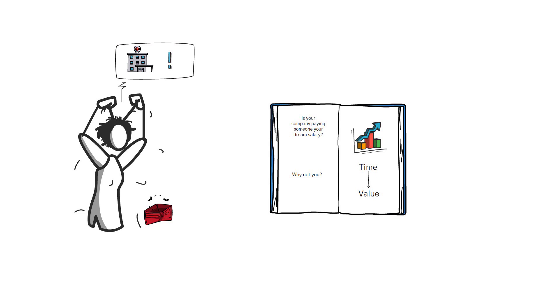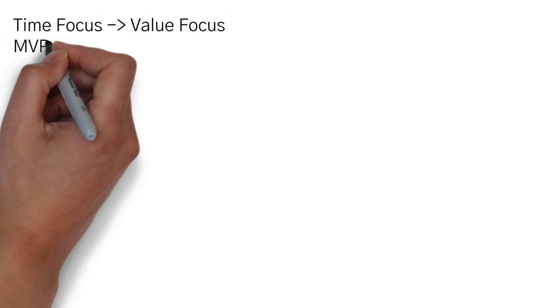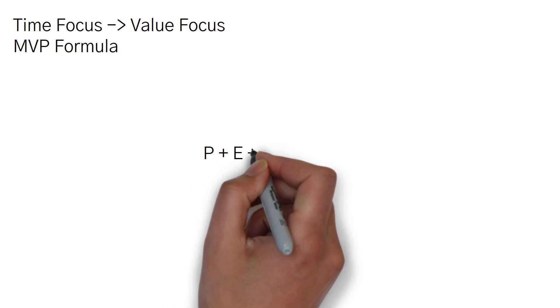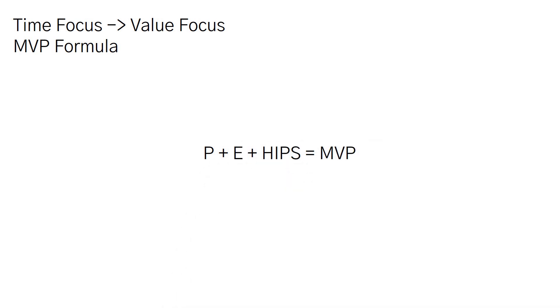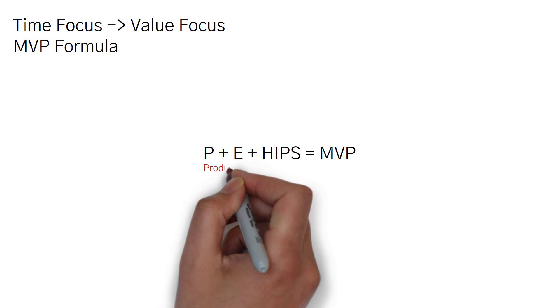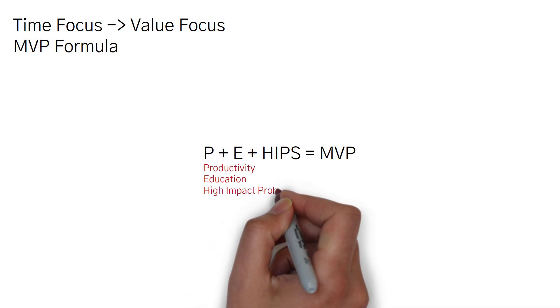And the way that we do all of that is what I call the MVP formula. And the MVP formula is P plus E plus HIPS equals MVP. So let's take the left half first. P stands for productivity, E stands for education, and the HIPS stands for high impact problem solving.